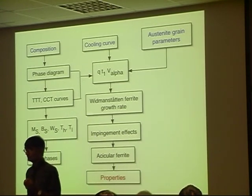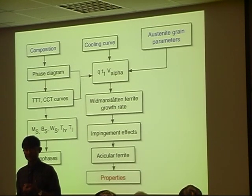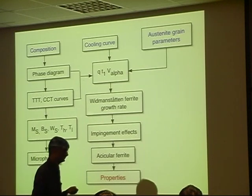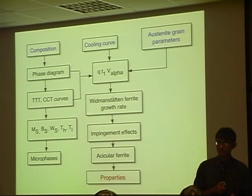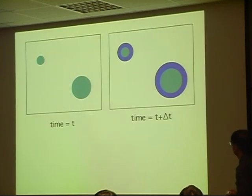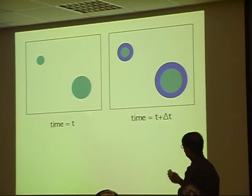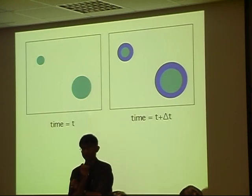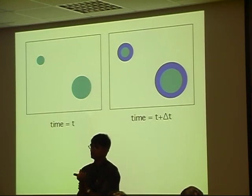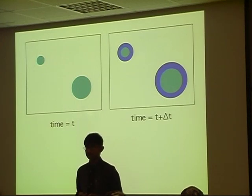But an engineer is not interested in the microstructure. What they want is properties, because they design on the basis of properties. It is our job to relate the microstructure to properties. Let me just, first of all, before I go on to properties, explain to you how you can treat more than one phase growing at the same time.